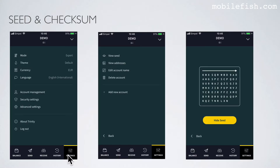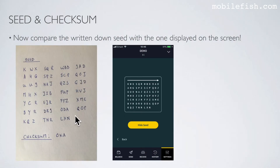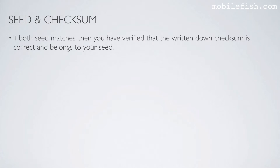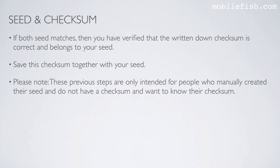After you have set up your wallet, select Settings, then Account Management, then select View Seed. Your seed will be displayed. Now compare the written-down seed with the one displayed on the screen. If both seeds match, then you have verified that the written-down checksum is correct and belongs to your seed. Save this checksum together with your seed. Please note, these steps are only intended for people who manually created their seed, do not have a checksum, and want to know their checksum.